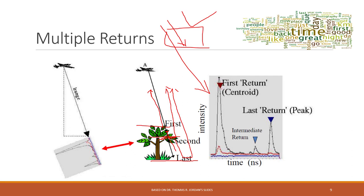When we receive the signals — the pulses — we know they are all from the same original signal. We can identify the first return, the intermediate return, and the last return, telling us the distance to the top, middle, and last layer of the target. LiDAR data can have multiple returns because part of the laser pulse energy can travel through the target and be reflected by the second, third, or lower parts.